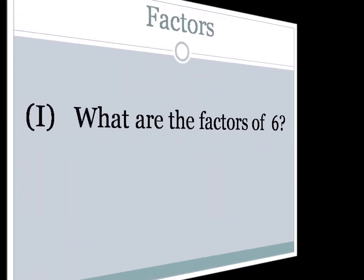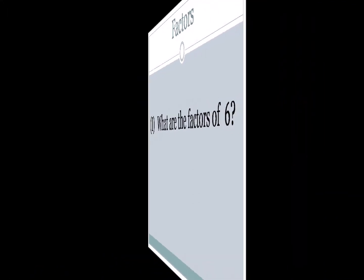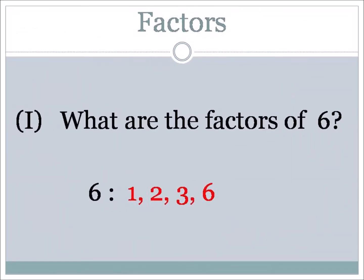Now let's get into the nitty gritty. What are the factors of 6? Remember, you always begin with 1. Going through 1, 2, 3, 4, 5, 6 — definitely 1 is a factor, 2 is a factor (2 goes into 6 three times), 3 is a factor (3 times 2 is 6), and 6 is a factor (6 into 6 goes once). So the factors of 6 are: 1, 2, 3, and 6.